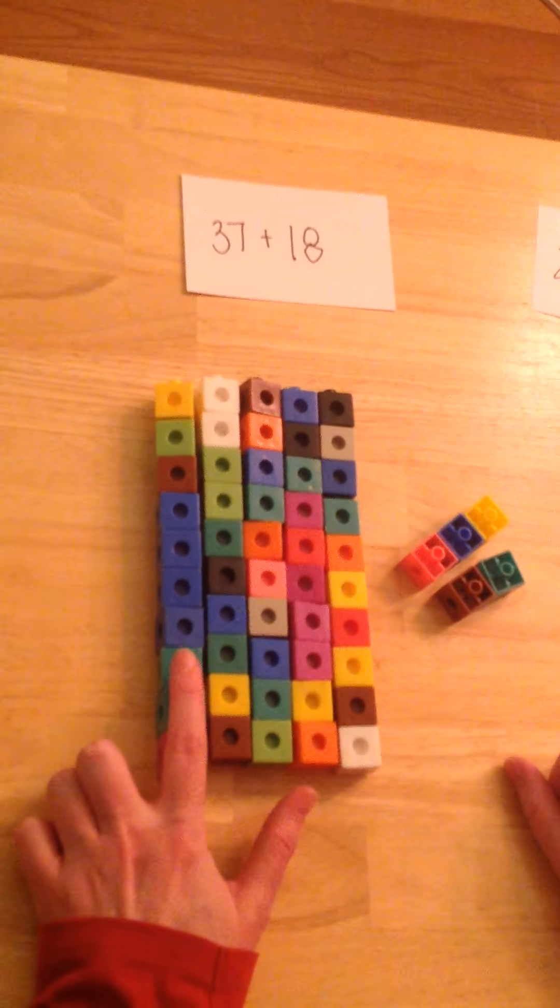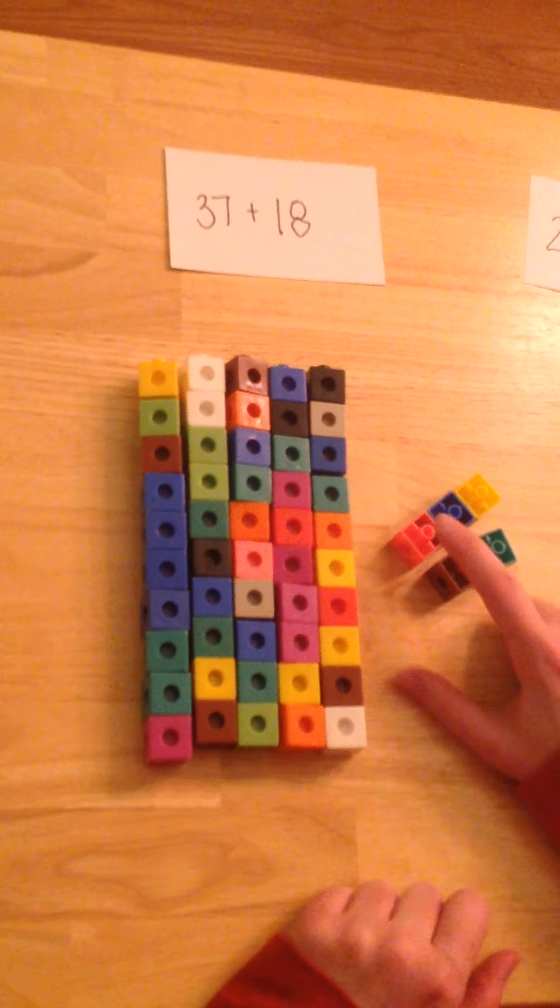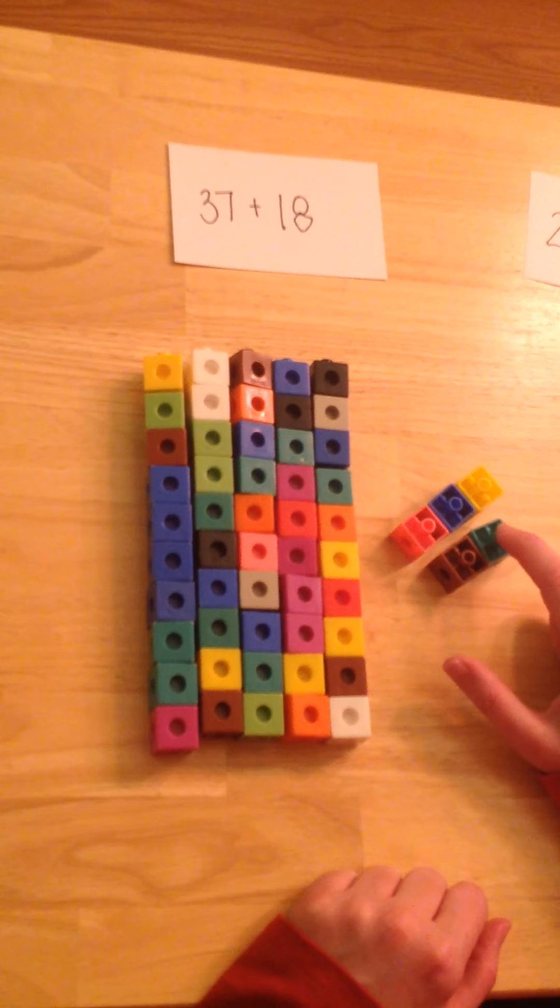37 plus 18 is 10, 20, 30, 40, 50, 51, 52, 53, 54, 55.